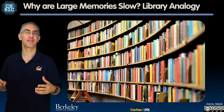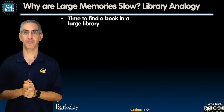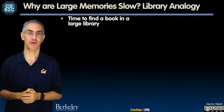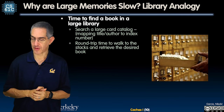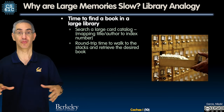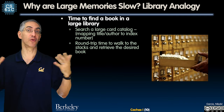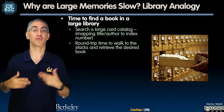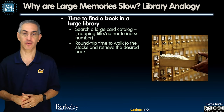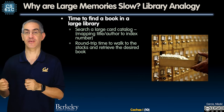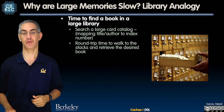Here's the analogy with libraries. You've got to find a book in a big library — you're a Cal student trying to find a book in the stacks. You go find the card catalog, and it's really large, so you're searching through it. The larger the library, the slower that is because there's more things to search through. There's also the round trip time to actually walk to the stacks and retrieve the book. So there are two stages: one is to look up where it is, and the second is to go get it and bring it back.